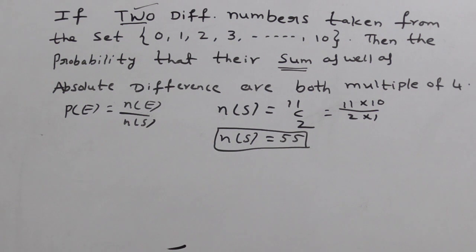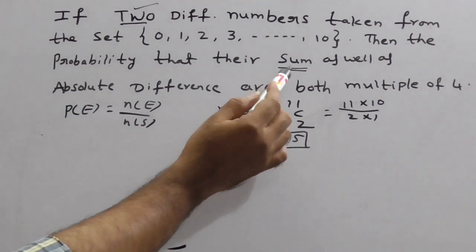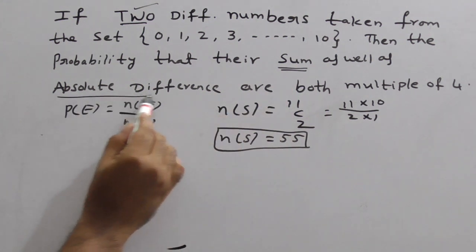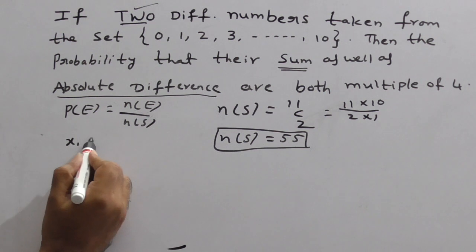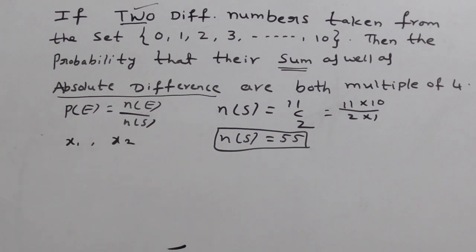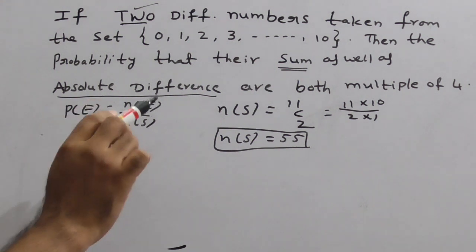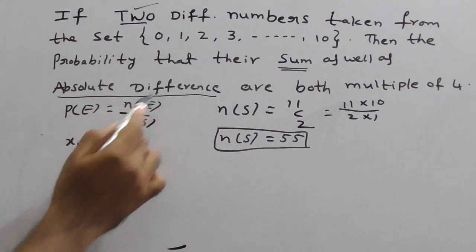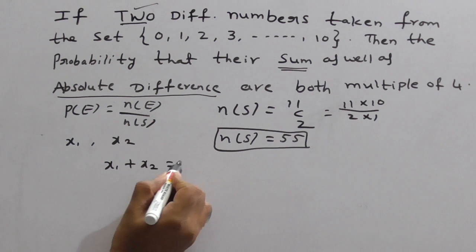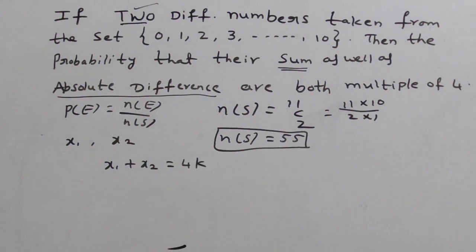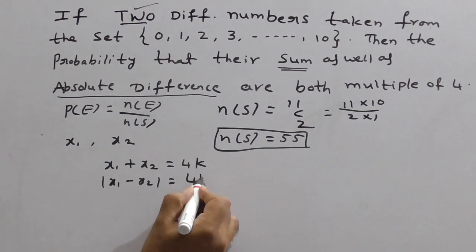Now come to the events. What is the event? The sum as well as absolute difference are both multiple of 4. For example, let the selected numbers are X1 and X2. According to given concept, sum should be multiple of 4 and absolute difference also should be multiple of 4. Therefore, X1 plus X2 is equal to 4K, and modulus X1 minus X2 is also multiple of 4, let it be 4M.